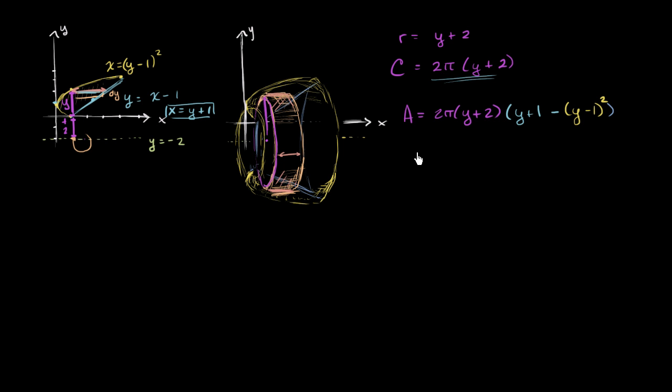And then if we want the volume of that shell, so we've got the outside surface area of the shell right now, we just multiply it by its depth, which is just dy. So that sets up our integral, the volume of one shell, I'll do it all in one color now, is 2 pi times y plus 2 times y plus 1 minus y minus 1 squared. And we multiply that times the depth of each shell, dy, and then we integrate over the interval. So the volume is going to be this. And what's the interval?